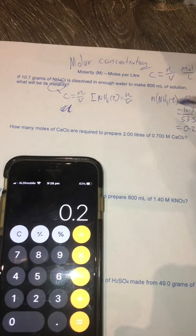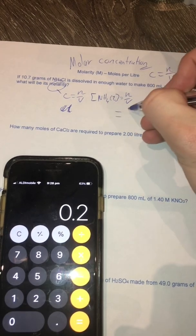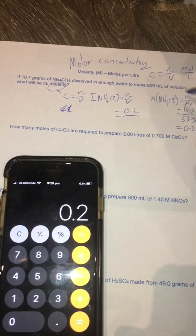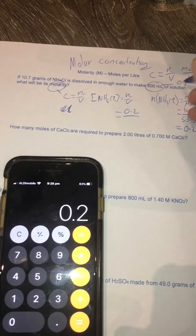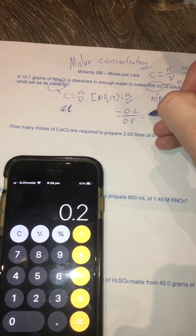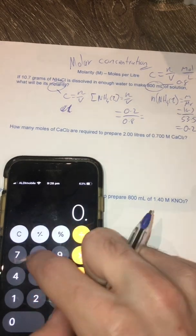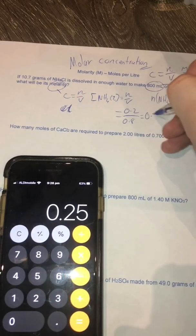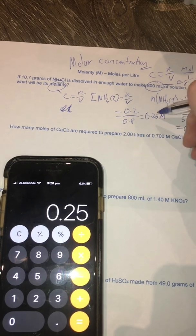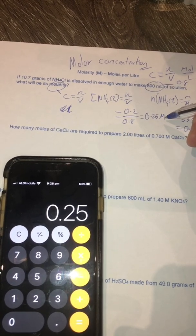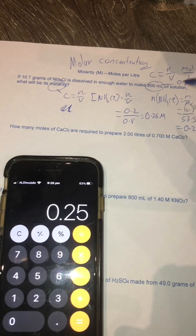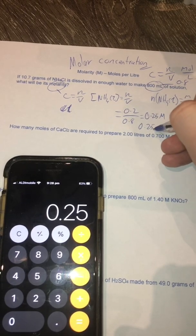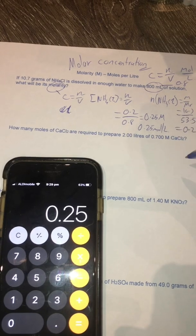So therefore I substitute that into here. So my 0.2 mol divided by my liters. Now this is 800 ml, I need to convert that to liters so it's going to be 0.8 liters. Divide by 0.8 equals that divided by 0.8. It's going to be 0.25 molar. So capital M is my unit for molarity, so therefore that's my answer there. Or I could write 0.25 moles per liter and that would be the same thing.